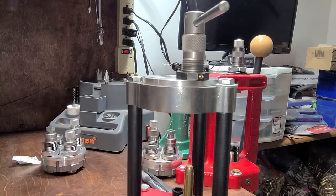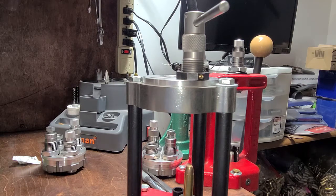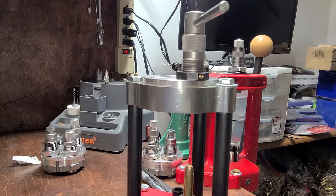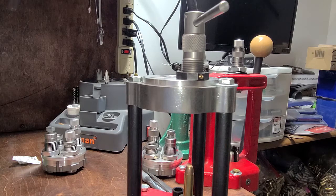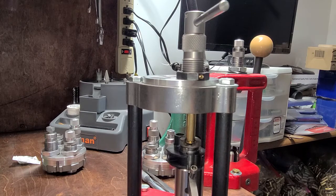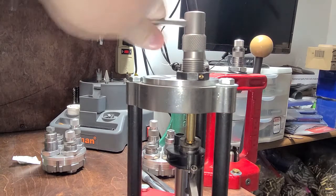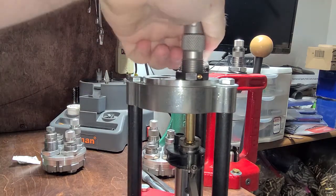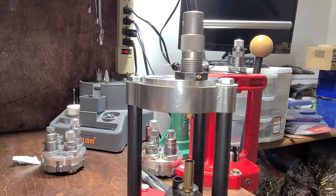I've got one in the press here and I'm using the RCBS collet bullet puller. What you'll do is run it up in there just to where the case hits the collet and stops, then tighten this down, and then just back it out. Then you've pulled the bullet.